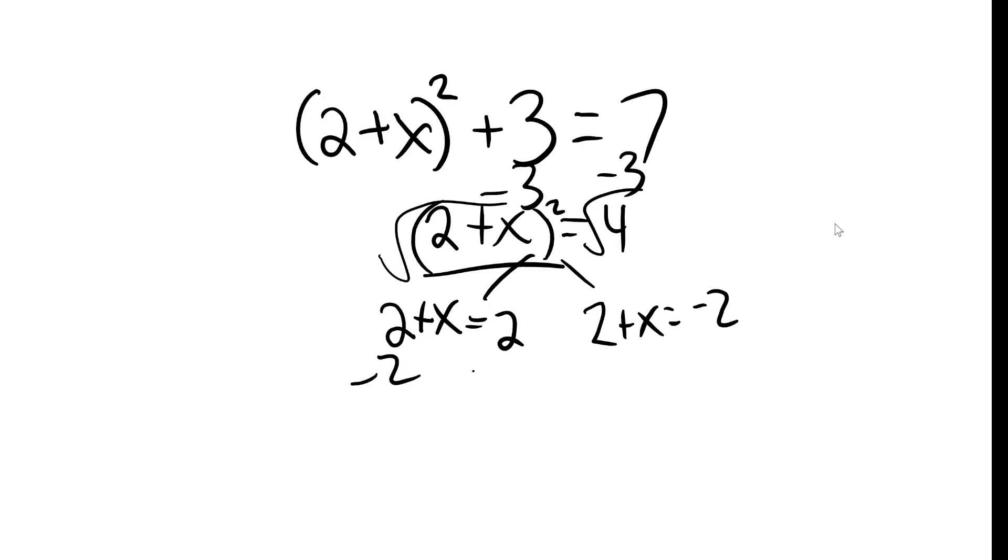Now I just solve each of these equations, and we get x equals 0, and x equals negative 4. So this had the same steps as the previous one, just much nicer numbers. So if you understand this process, you should be able to see what happened in the previous one and make a little more sense of it.